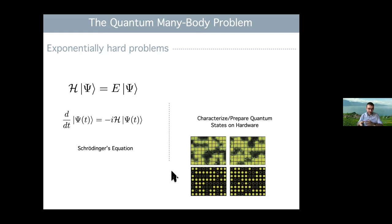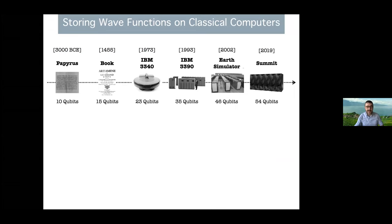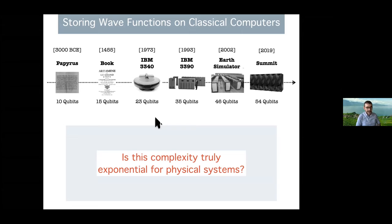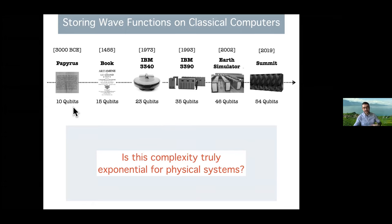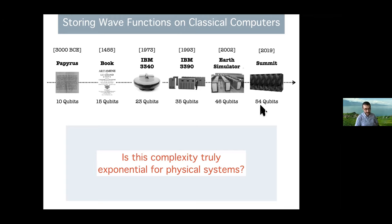There are also other more subtle exponentially scaling problems because of the complexity of the wave function. For example, if you try to prepare a certain quantum state with a quantum circuit, in general for the most general state this task is exponentially complex. Just in terms of storage, this is essentially a hard problem — if you wanted to store the wave function of 54 qubits, you would need essentially all the memory of the largest supercomputer we have to date. Storing the wave function of a material with more than 200 qubits is essentially impossible using classical storage.